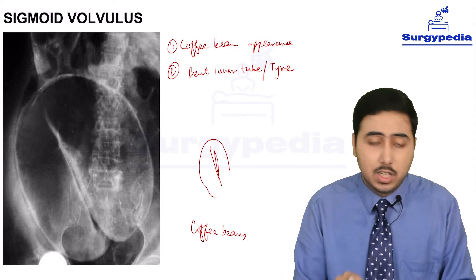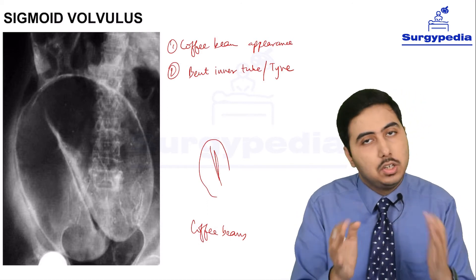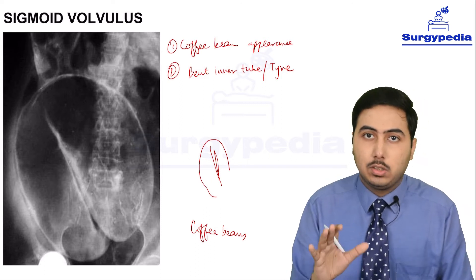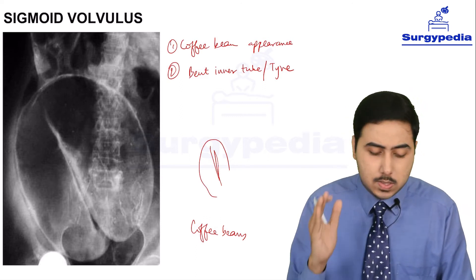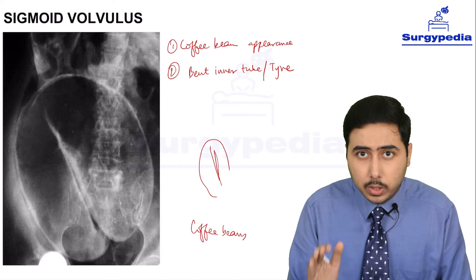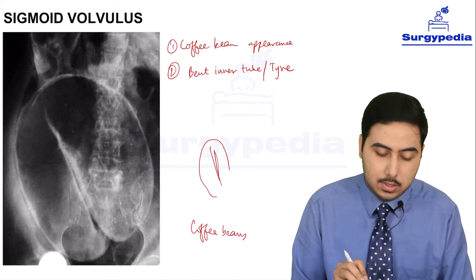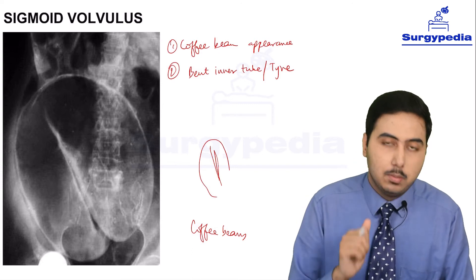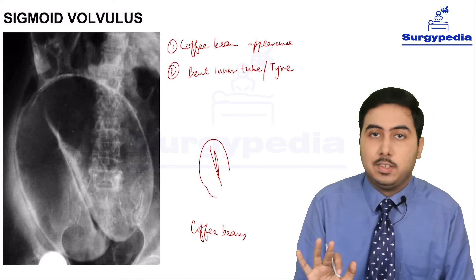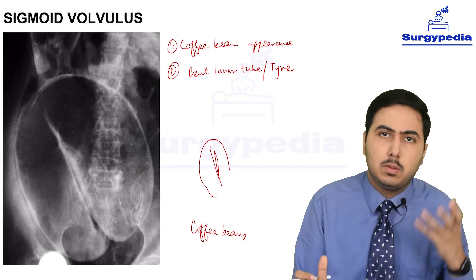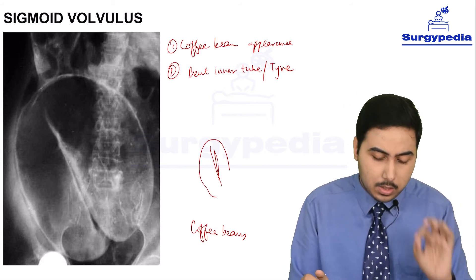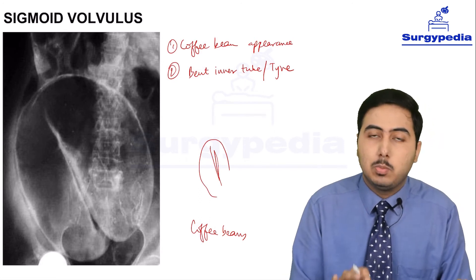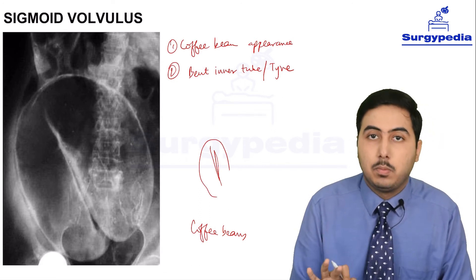This is a classical image. If you cannot diagnose this image, it is going to be quite a discredit. It is not difficult at all - not an obscure image or a rare cause. Sigmoid volvulus is not that rare, and this picture is extremely classical. Please be thorough with this image - you need to diagnose it in the exam. The diagnosis is very important. So: coffee bean appearance, bent inner tube or tire appearance - this is sigmoid volvulus.